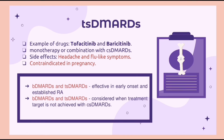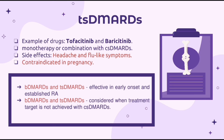For tsDMARDs, they have a better safety profile than bDMARDs. Examples include tofacitinib and baricitinib. They can be used as monotherapy or in combination with csDMARDs. Side effects include headache and flu-like symptoms, and they are contraindicated in pregnancy. Both tsDMARDs and bDMARDs are effective in early-onset RA and should be considered when treatment targets are not achieved with csDMARDs. Patients on tsDMARDs and bDMARDs should be screened for TB, HIV, and hepatitis prior to treatment to prevent activation of latent viral infections.